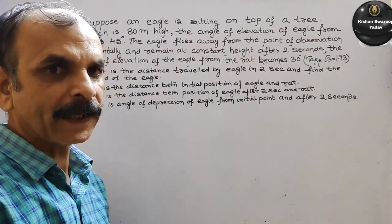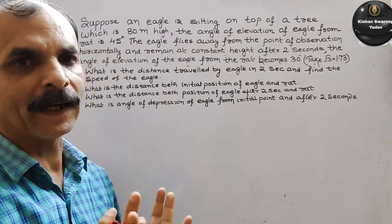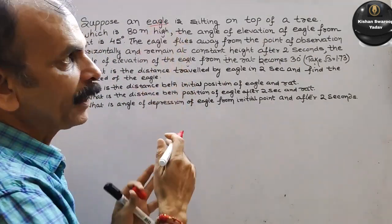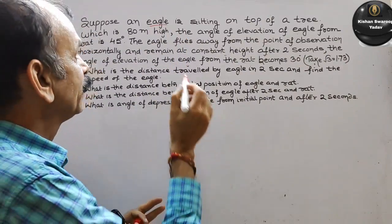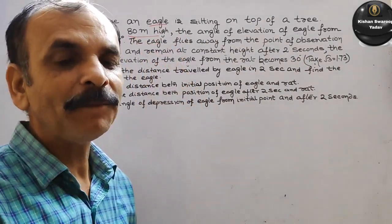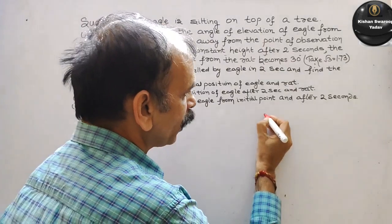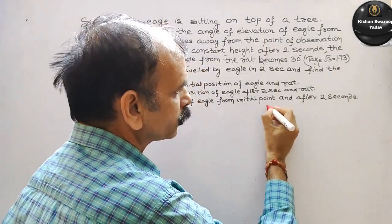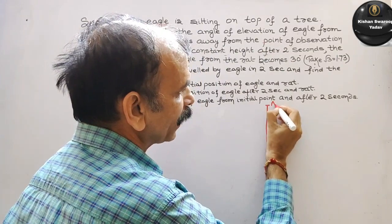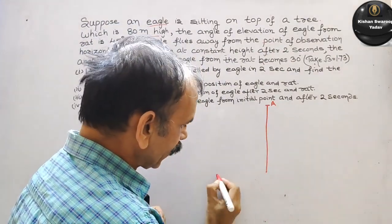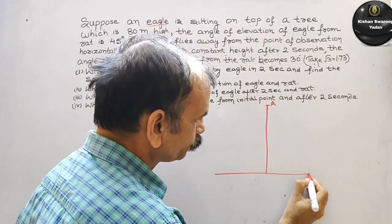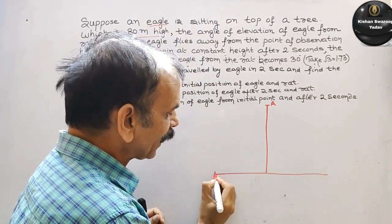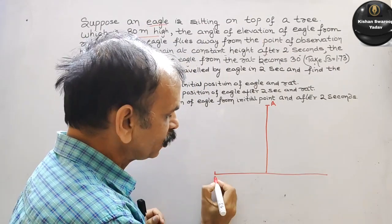तो आप देखो, आपको करना क्या है? यह जो बोल रहा है, पहले diagram बनाओ. इसने बोला है कि eagle हमारा कहां पर बैठा है? Tree के उपर. Tree की height 80 meters है. तो एक diagram बनाना है. Suppose यहाँ पर आपका eagle बैठा है, और यह आपका ground है, और यहाँ पर आपका rat है — that is your R.